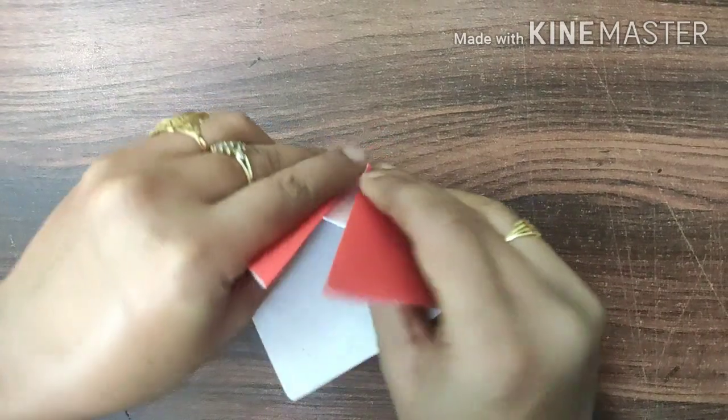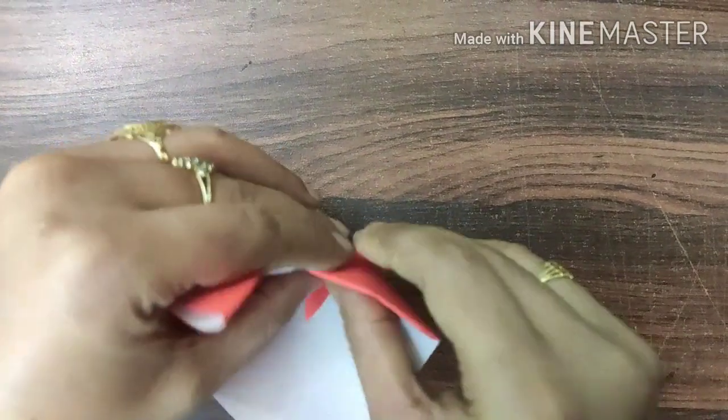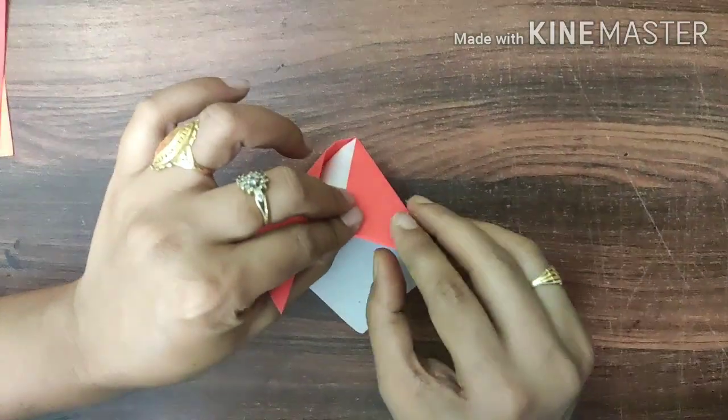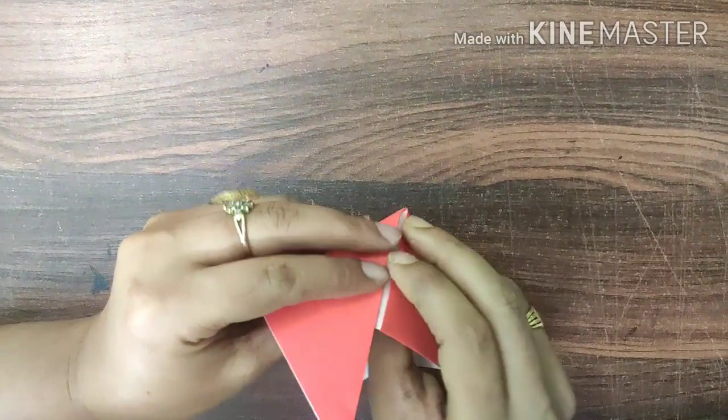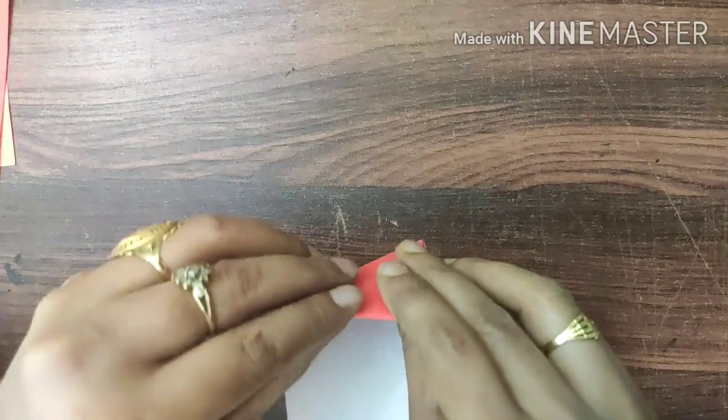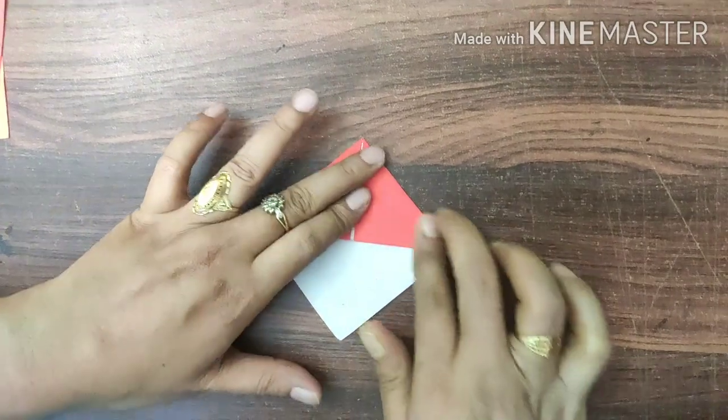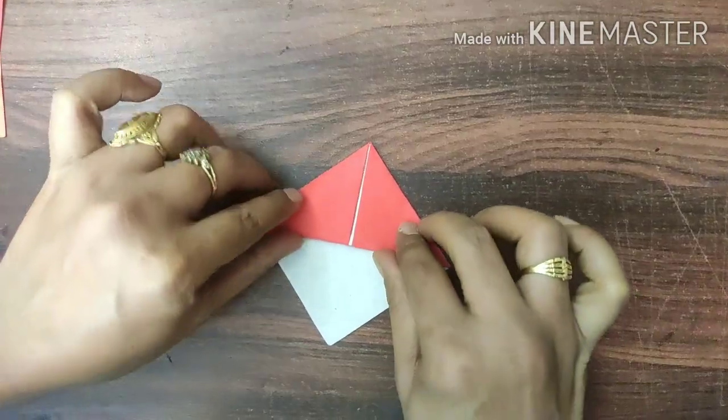Now open this like a cap and insert the remaining part inside it as shown. Press it like this. Do the same from the other side. Our base of the bookmark is ready.